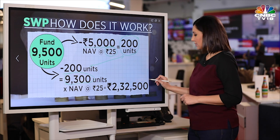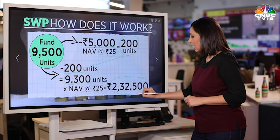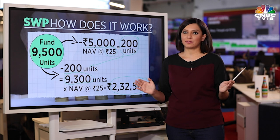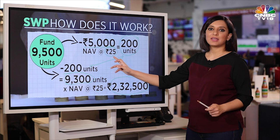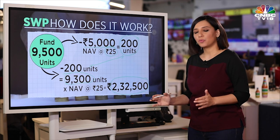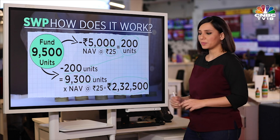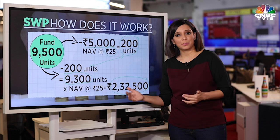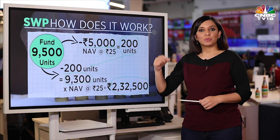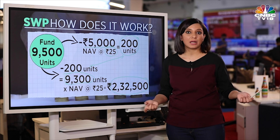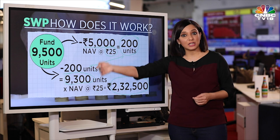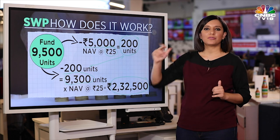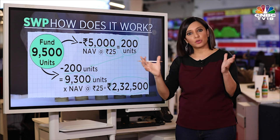So from 9,500 you've taken out 200 units, leaving you with 9,300 units. At the rate of 25 rupees per unit, your current corpus is about 2,32,000 rupees — compared to only 95,000 last month when NAV was 10. So compared to a pension fund or any other method for monthly income, your corpus also keeps growing. For a long-term goal like retirement — 10, 15, or 20 years away — perhaps the best investment could be in an equity fund from which you later take out money via SWP, which also keeps growing.